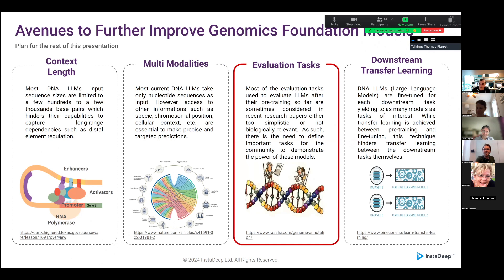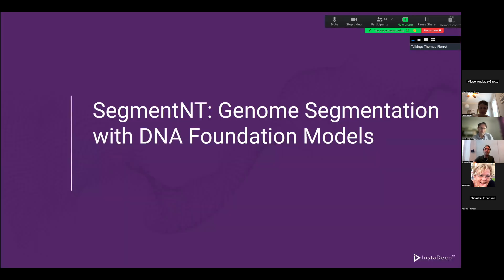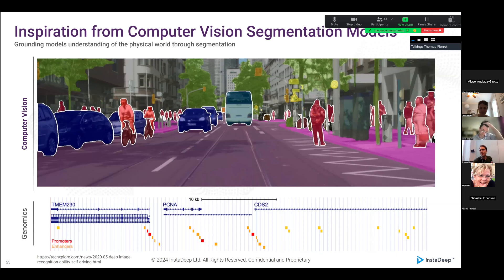Moving to evaluation tasks: if you recall, I presented the 18 tasks used to evaluate our model in the Nucleotide Transformer paper. These tasks have been useful to test design choices and refine training parameters. However, as noticed by many people in the community, these tasks might not be biologically relevant or may be too simplistic. We are also trying to demonstrate the power of the Nucleotide Transformer on tasks that are really hard and that really matter to the community. One motivation was what happened in computer vision a few years ago, where systems were trying to perform simple classification or regression from images.